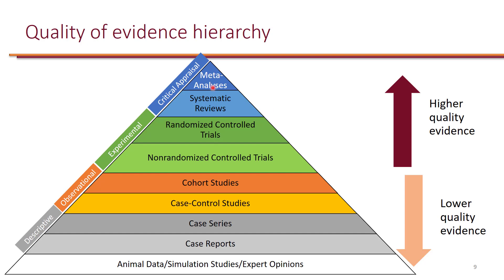Looking at the quality of evidence hierarchy, systematic reviews and meta-analyses are at the very top. However, we must be careful — meta-analysis could include multiple randomized clinical trials or multiple observational studies. A meta-analysis of observational studies is lower quality than one of randomized controlled trials, and often we will see meta-analyses of both observational and randomized clinical trials in the same study.